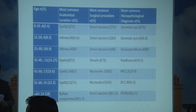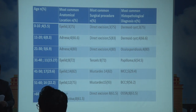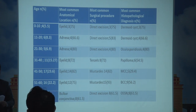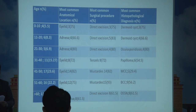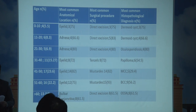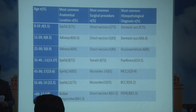This table shows that in the age group 0 to 10, there were four patients; the most common anatomical location was the eyelid, the most common surgical procedure was direct excision, and the most common histopathological diagnosis was dermoid cyst. In the 11 to 20 age group, ocular adnexa was the commonest anatomical location, direct excision was done, and dermoid cyst was again the commonest diagnosis.